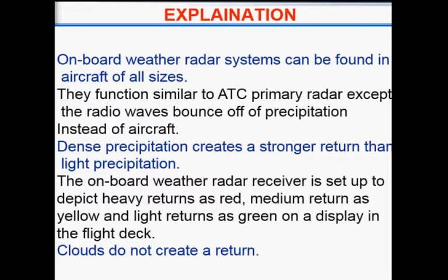Dense precipitation creates a stronger return than light precipitation. If the clouds are dense they provide a stronger return, and if clouds are not thick and do not have much water precipitation, the return would be light. The onboard weather radar receiver is set up to depict heavy return as red, medium return as yellow, and light return as green on the flight deck display. Clouds alone do not create a return.